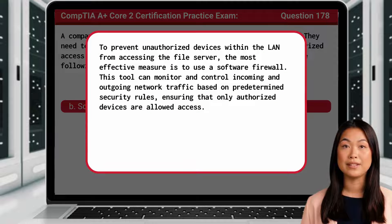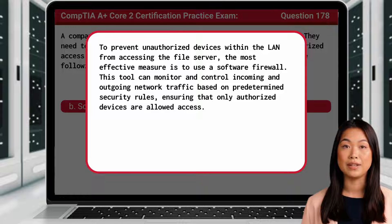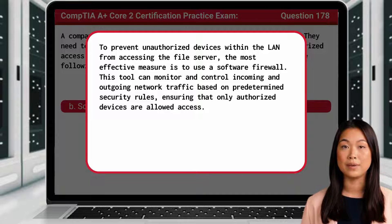To prevent unauthorized devices within the LAN from accessing the file server, the most effective measure is to use a software firewall. This tool can monitor and control incoming and outgoing network traffic based on predetermined security rules, ensuring that only authorized devices are allowed access.